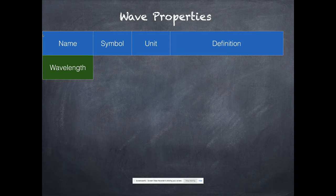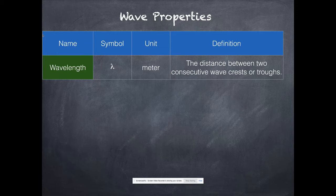We'll talk about wavelength first. It's given the symbol lambda, Greek letter. I recommend you print out a page that's got a list of the Greek letters and their names. The unit is the meter or some derivative of the meter. It can be centimeters, nanometers. We're going to use nanometers a lot, actually. And it's the distance between two consecutive wave crests or troughs. Hopefully you remember this from last year.